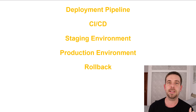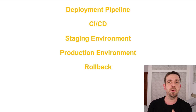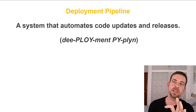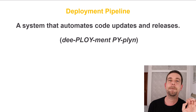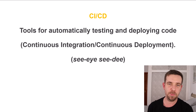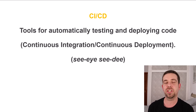The number one thing is pronunciation. If you are a backend developer, you probably know this vocabulary, but it's the pronunciation. Deployment pipeline — the stress is on the second syllable: deployment, not deployment. Deployment pipeline. CICD stands for continuous integration, continuous deployment.